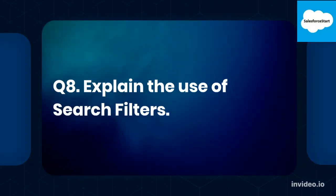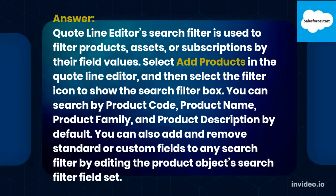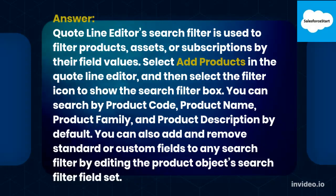Q8. Explain the use of Search Filters. Answer. The Quote Line Editor's Search Filter is used to filter products, assets, or subscriptions by their field values. Select Add Products in the quote line editor, then select the filter icon to show the search filter box. You can search by product code, product name, product family, and product description by default. You can also add and remove standard or custom fields to any search filter by editing the product object's search filter field set.